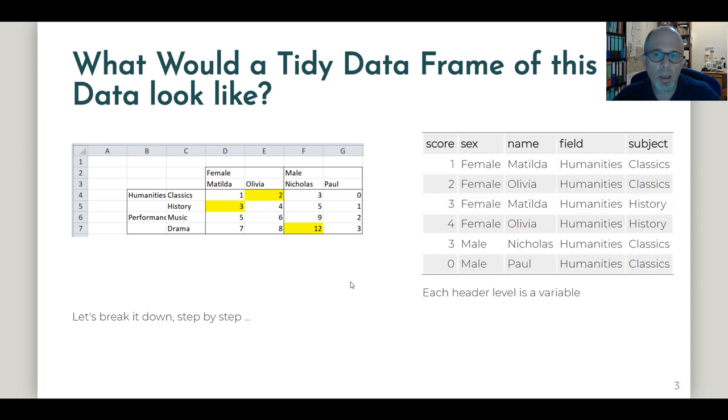So the data in tidy format could look like this on the right. We have a numeric variable that is here called score that contains the actual values. And then we have four variables that each correspond to one level of header.